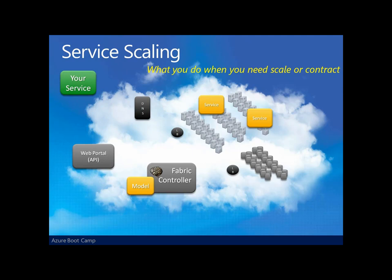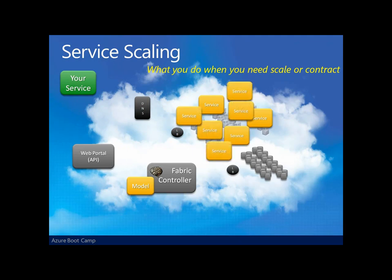Azure and the cloud help provide scalability. If your application starts to see large demand, you use the web portal or service management API to tell the fabric controller to provide more instances of your application in that fabric. Then, as demand weakens, use that same portal or API to have the controller remove instances from the fabric. So you get capacity on demand as you need it, helping to eliminate or at least greatly reduce excess capacity or insufficient capacity.